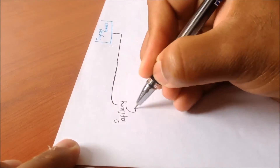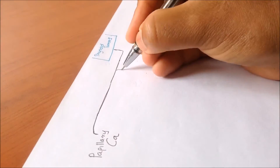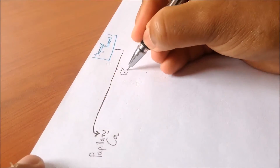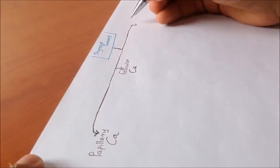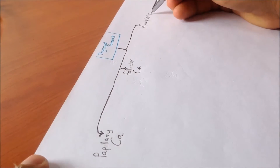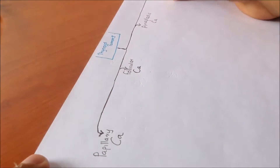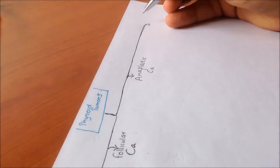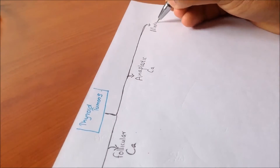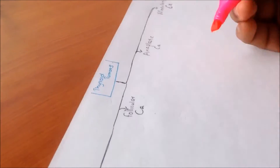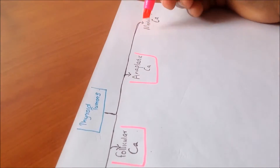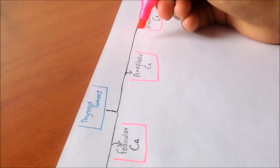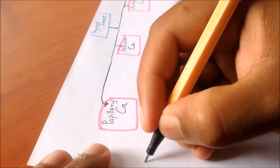The main thyroid tumors are papillary carcinomas, follicular carcinomas, anaplastic carcinomas, and medullary carcinomas. These four are the main carcinomas of interest.